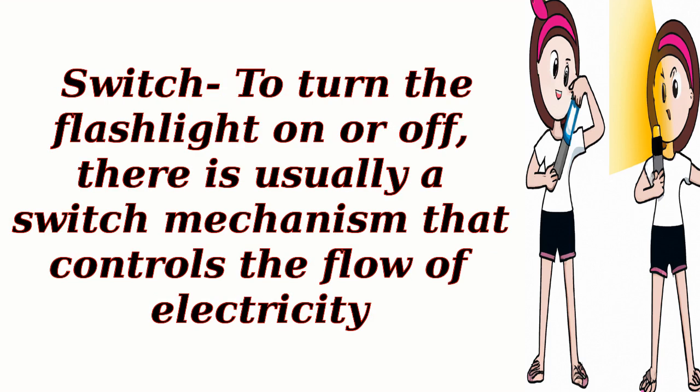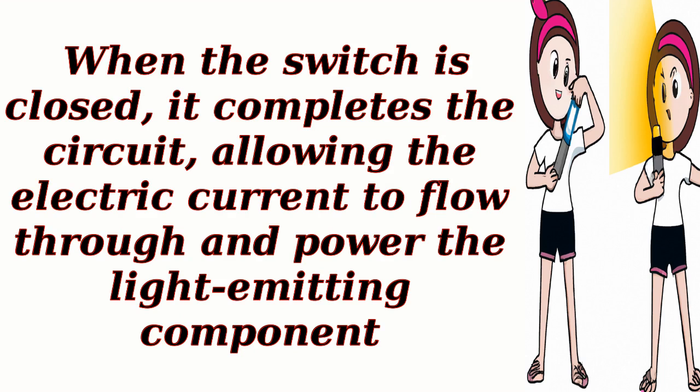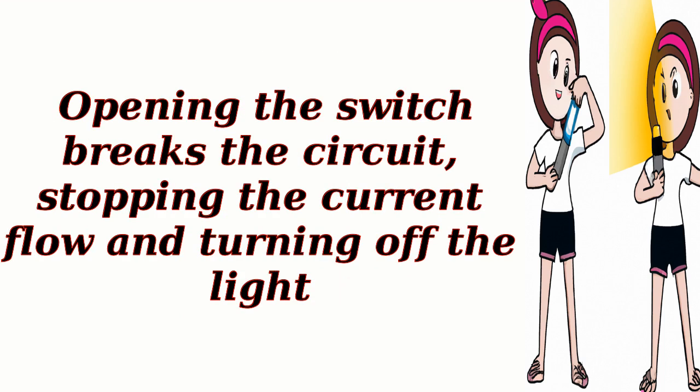Switch: to turn the flashlight on or off, there is usually a switch mechanism that controls the flow of electricity. When the switch is closed, it completes the circuit, allowing the electric current to flow through and power the light-emitting component. Opening the switch breaks the circuit, stopping the current flow and turning off the light.